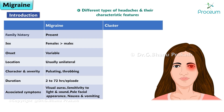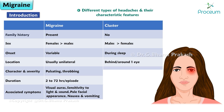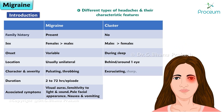In cluster headache, there is no family history and males are more often affected than females. Onset is during sleep, location is behind or around one eye, and the character is an excruciating sharp steady pain. Duration lasts for 15 to 90 minutes per episode.